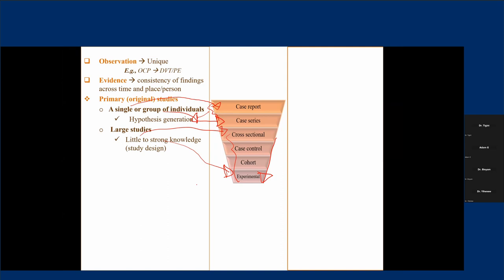I want you to understand that this doesn't mean we have to conduct experimental studies in every scenario. There are different issues that limit us from using higher research designs due to ethical issues, patient characteristics, cost, and many other factors. So it doesn't mean choosing the most strong study design is always the best option considering our specific research design. In general, primary studies are divided into two: from case reports up to cohort, we call them observational studies; and the other is experimental study.